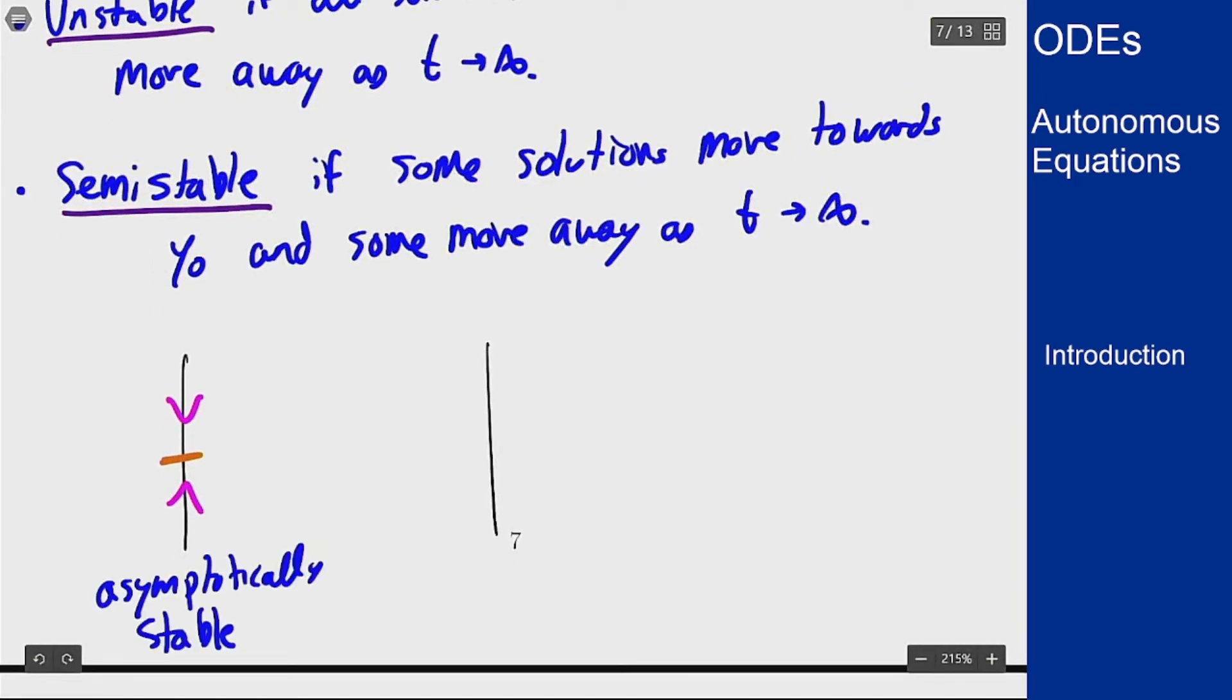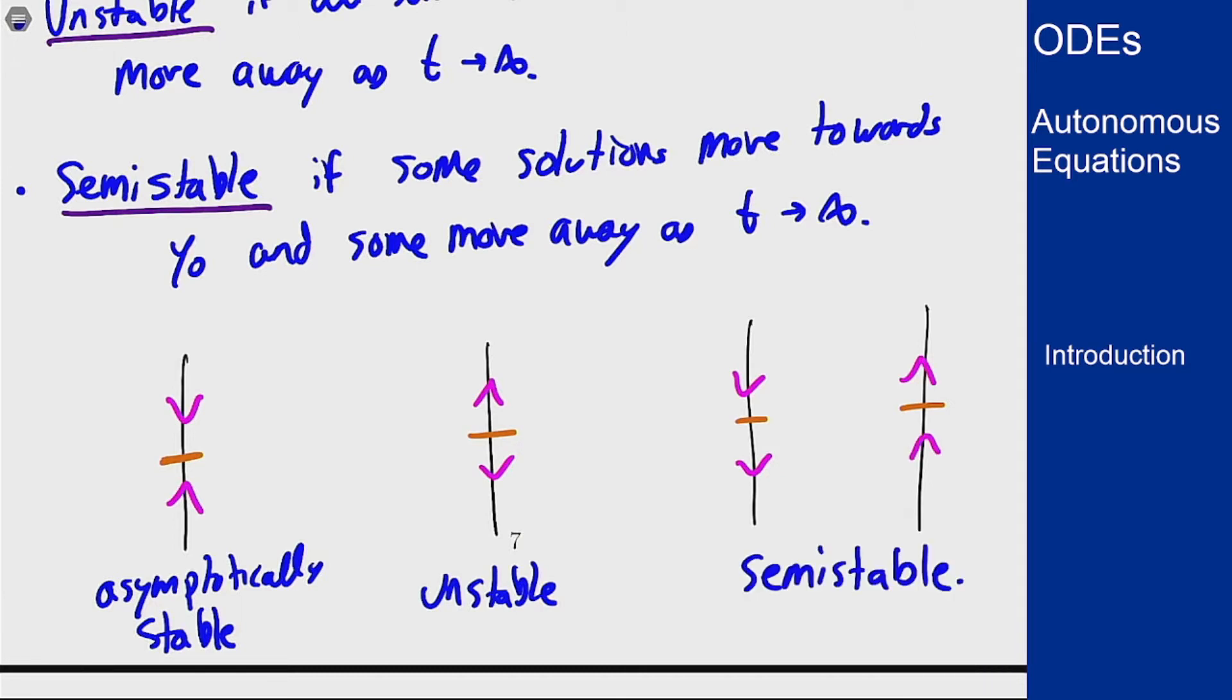If we have one where both arrows go away, that's unstable. And semi-stable has two cases but the idea is that one side comes in and one side goes out. So down down or up up, these are both semi-stable. So in terms of a phase line that's how we can look at this different stability.